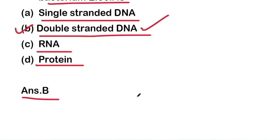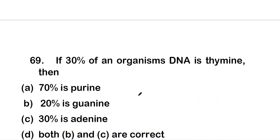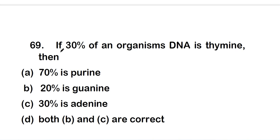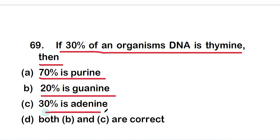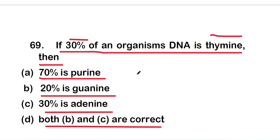Question 69: if 30 percent of an organism's DNA is thymine, then — option A, 70% is purine; option B, 20% is guanine; option C, 30% is adenine; or option D, both B and C are correct. Since thymine is 30%, adenine is also 30% because they are complementary bases.